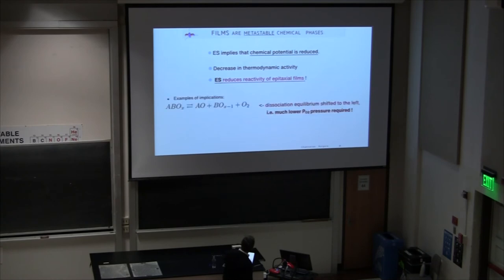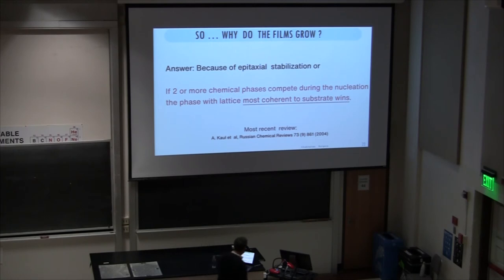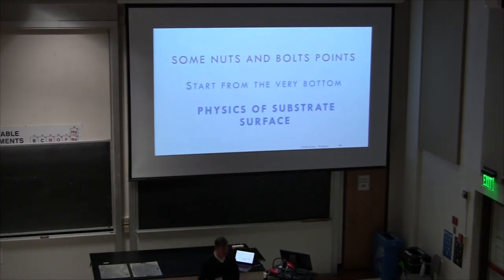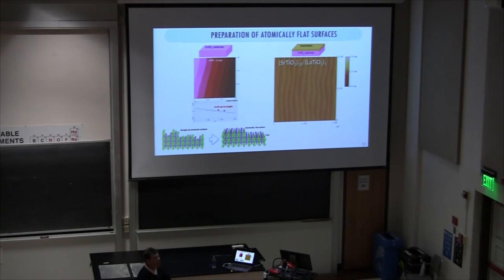The simple rule to memorize: when two or more chemical phases compete during nucleation, the phase with the lattice most coherent to the substrate wins. That's why films grow. Now, substrates are terribly important. What we get from colleagues who grow single crystals is polished and very good, but you cannot grow atomically flat things on a rough surface. What we want is single termination, and there's a whole business of how to get from a rough surface to that — involving a lot of soft chemistry.